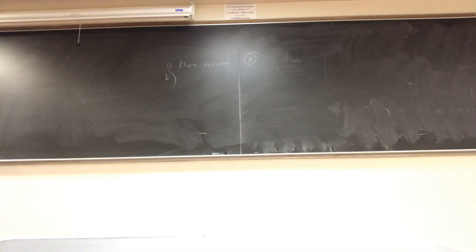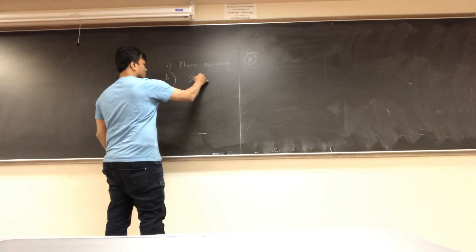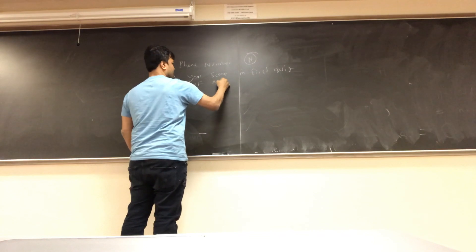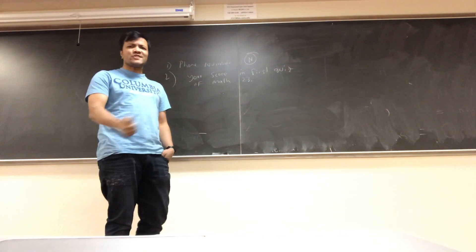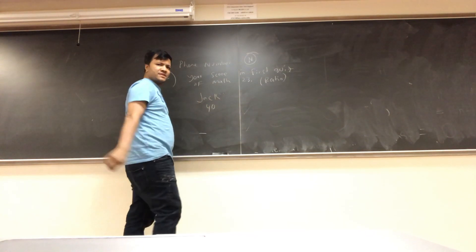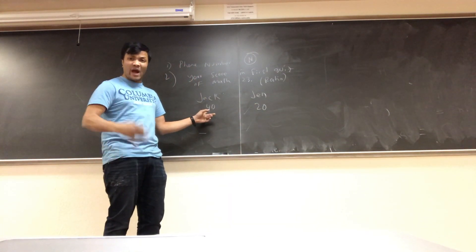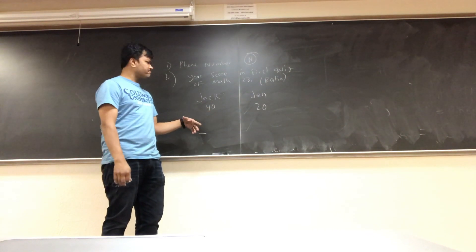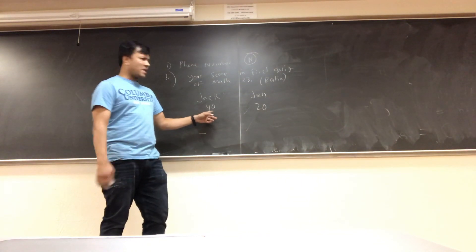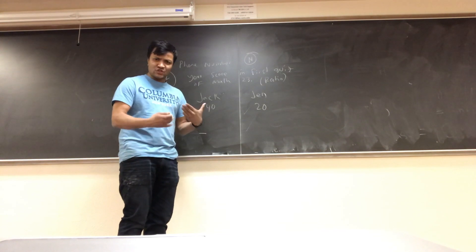Number two: your math score on the first quiz, for example 23. That's ratio. Why? Because if Jack got 40 and Jan got 20 on the quiz, you can say Jack scored twice as much as Jan. That means zero has a true value — which makes it ratio.